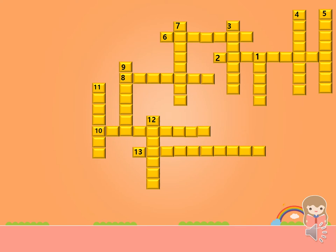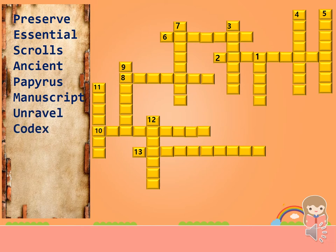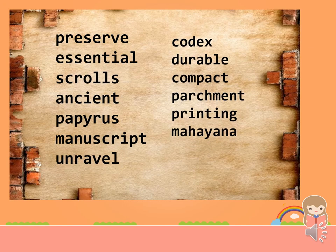Today we are going to read a paragraph about books. But before that, let us first answer the crossword puzzle using the words we will encounter when we read the paragraph. Do you have what it takes to be a word master? The words are: preserve, essential, scrolls, ancient, papyrus, manuscript, insert, unravel, codex, durable, compact, parchment, printing, and Mahayana. All you have to do is select the word that is being described. Let's start with 'down' — item number one, five letters: it is an ancient manuscript text in book form. My grandfather owns a ___ that he likes to read.